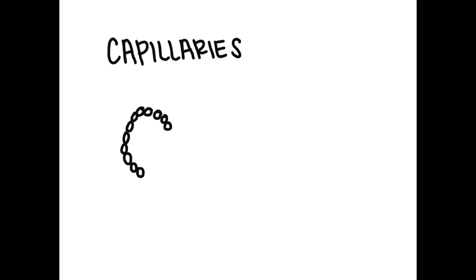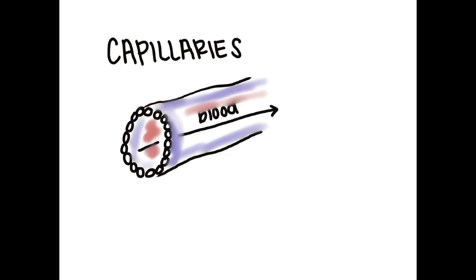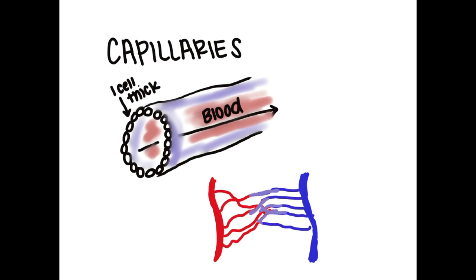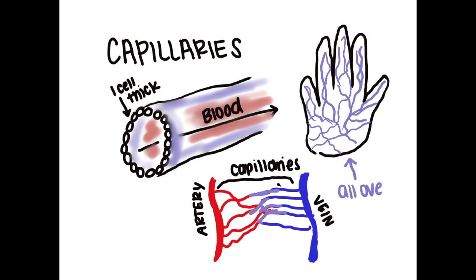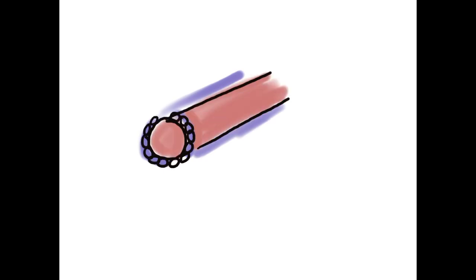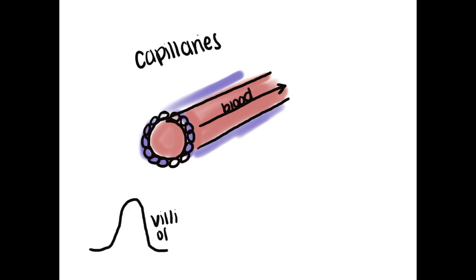It's easiest to start off with the capillaries. These one-cell thick walled transportation areas are found all over your body, especially in your tissues. We have a ton of cells, so it makes sense that we have a ton of capillaries. Just like the small intestine, capillaries are only one cell thick and are semi-permeable. This allows certain things to go in and out of the capillaries.